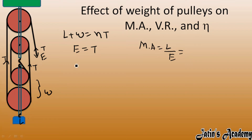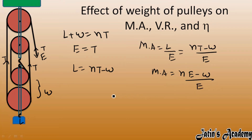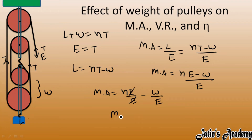Mechanical advantage equals load upon effort. The load value is nT minus W (weight of pulleys), so MA = (nT - W) / effort. Since T equals effort, we replace tension with effort. Dividing separately: mechanical advantage = n·effort/effort - W/effort, which gives MA = n - W/E.